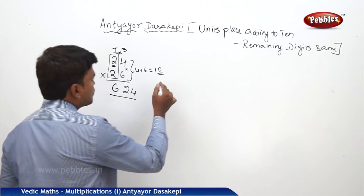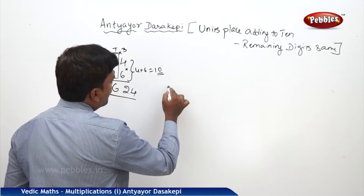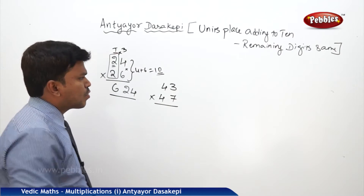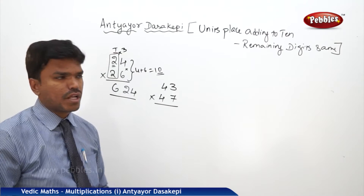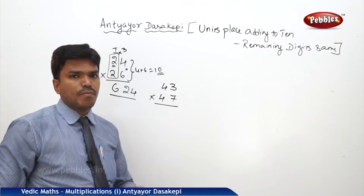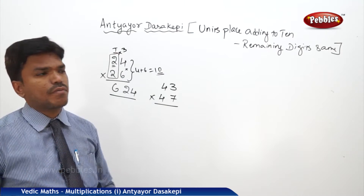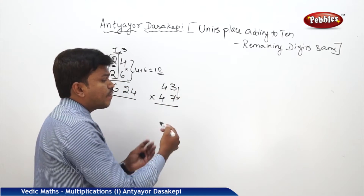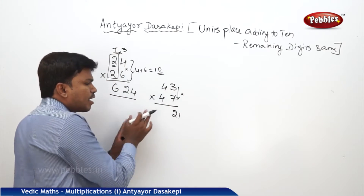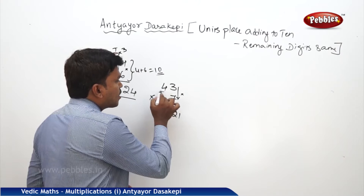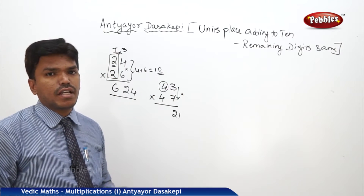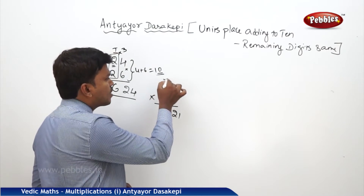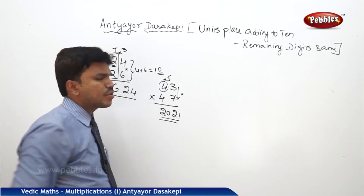One more example. Suppose you want to multiply 43 into 47. The ones place: 3 plus 7 equals 10 — first condition is applicable. The remaining digits: 4 and 4, they are same — second condition also applies. Multiply the digits in the ones place: 3 times 7 is 21. Then the remaining digit 4 is multiplied with its next number, which is 5. So 4 times 5 is 20. Your answer is 2021.